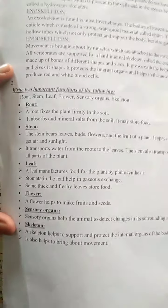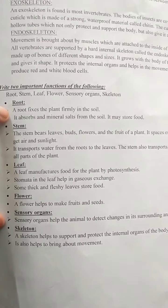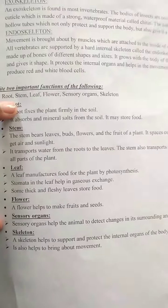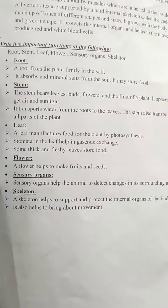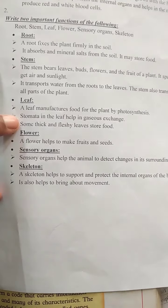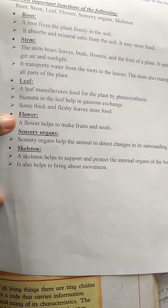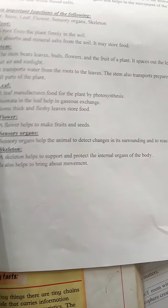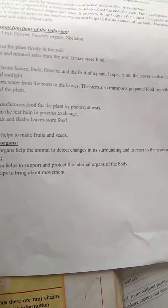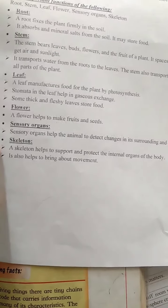In this part, write two important functions of the following: roots, stems, leaves, flowers, sensory organs, and skeleton. Flowers help to make fruits and seeds. Sensory organs help to detect changes in the environment. The skeleton helps to protect the body and helps with movement.